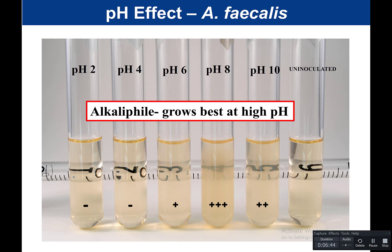This demonstrates that different bacteria have different optimal pH values. Some grow best at an acidic pH, some at a neutral pH, and some at an alkaline pH. If you were shown these tubes, you would want to be able to look at them and, based on which tubes grew, determine whether that bacteria is an alkalophile, a neutrophile, or an acidophile, based on the pH range at which they grew.